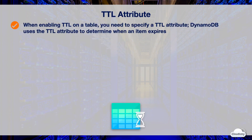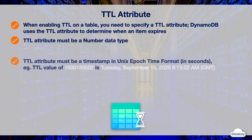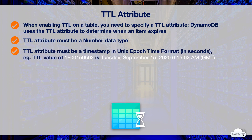When you enable TTL on a table, you need to specify a TTL attribute. DynamoDB uses the TTL attribute to determine the item expiration time. The data type of the TTL attribute must be the number type — if you use any other data type, the TTL process will ignore the attribute. The TTL attribute value must be a timestamp in Unix Epoch Time format, which is a number in seconds representing a date and time. If you use any other format, the TTL process ignores the item.